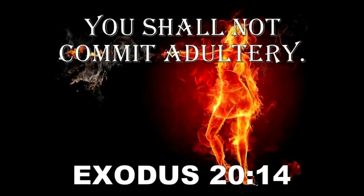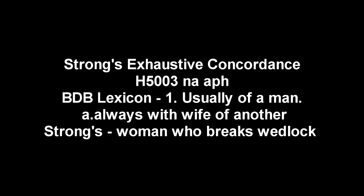When we look at adultery, where do we find it? We find it in Exodus 20. If we go to Exodus 20:14, it reads: 'Thou shalt not commit adultery.' And when we click on the word 'adultery,' we come up with the Hebrew word H5003 — it's na'af. In the lexicon, it means to commit adultery, usually of a man, which is the first one. It says 'always with wife of another.'